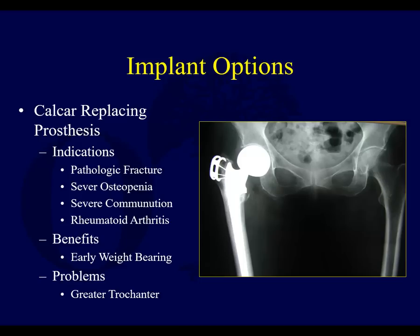Replacement options also exist. Some feel a calcar-replacing prosthesis is necessary when doing a total hip for intertrochanteric fractures; others disagree. Total hip can be done for these, but it's rarely indicated — perhaps for bad pathologic fractures, severe comminution, or rheumatoid patients. It's a more complicated procedure than for femoral neck fractures because of the disruption in the area where you need to seat the prosthesis.